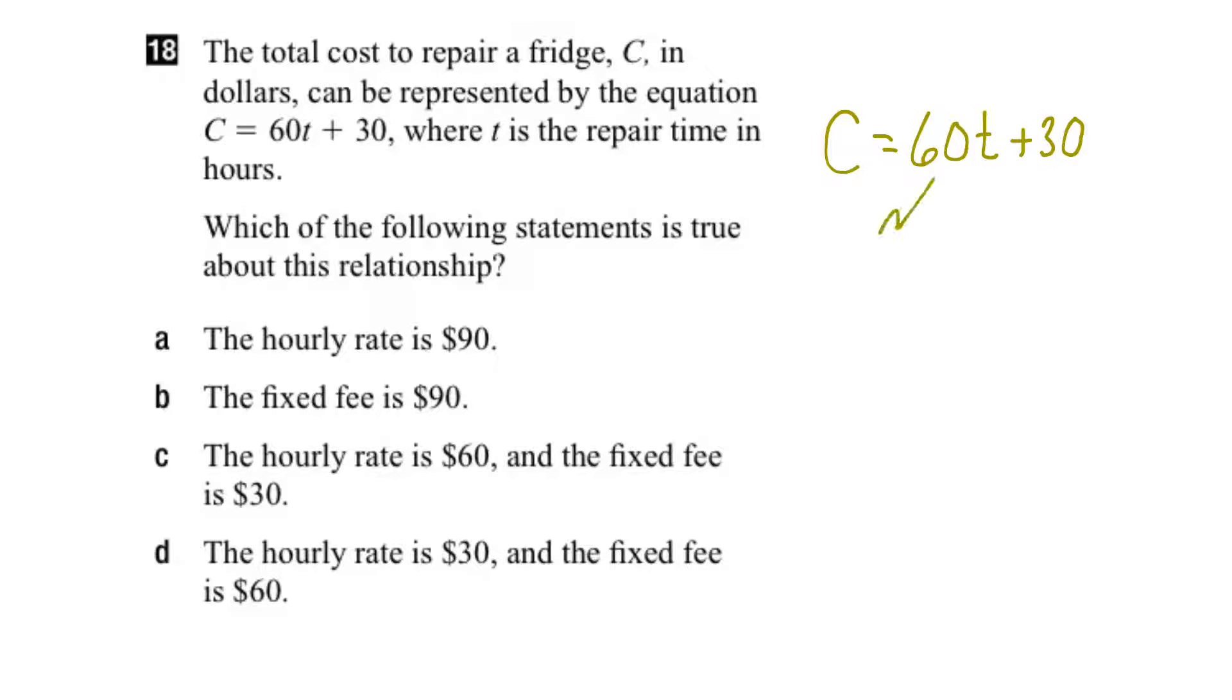So 60 represents the hourly rate to repair the fridge, and 30 represents our initial value or in our case our fixed fee.